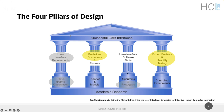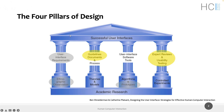Then we moved to the third pillar: starting from the needs we extracted, we began prototyping — designing something — starting with low-fidelity prototypes and also using tools like Figma for medium-fidelity prototypes. In designing and prototyping our solutions we also exploited the second pillar: theories and models, guidelines, and design patterns to guide our design process. Now it's time to start evaluating what we are producing — the fourth pillar.